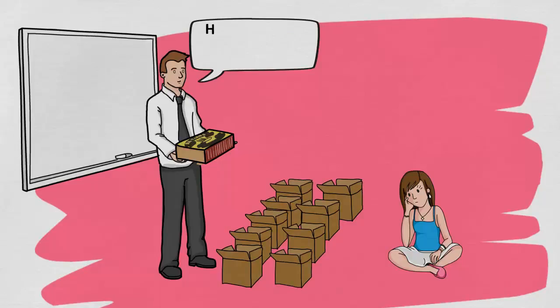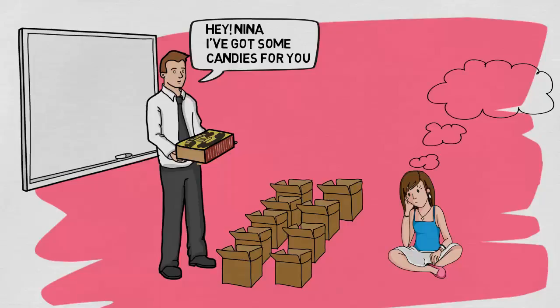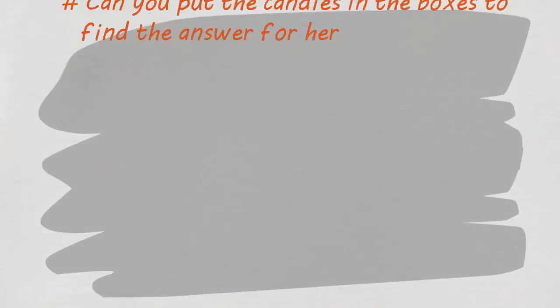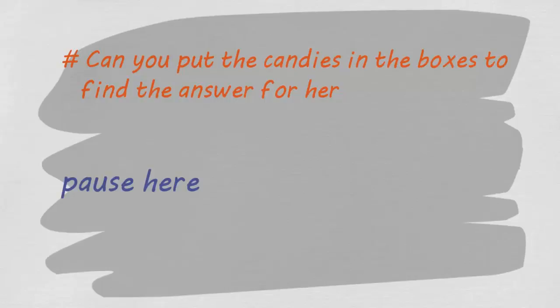He then asks Nina to place the candies in the boxes in a manner that if he demands any number of candies, she can give a box or a combination of boxes to him without taking out any of them. If she can do it, all one thousand candies will be hers to have. How would you accomplish the same if it were you in her place?